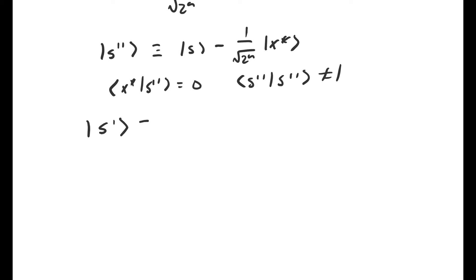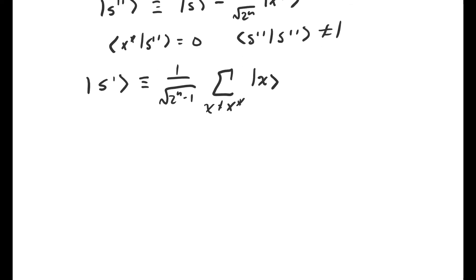So this is s prime. It's equal to one over root two to the n minus one, and then sum over the two to the n minus one basis vectors, which exclude x star. So s prime and x star span the same space that s and x star do, except these two form an orthonormal basis of the state, which is going to be convenient later on.